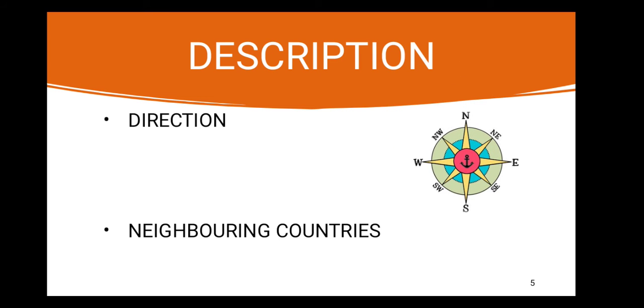How many directions are there? There are two types of directions: cardinal directions and intermediate directions. What are cardinal directions? Cardinal directions are north, south, east, and west.